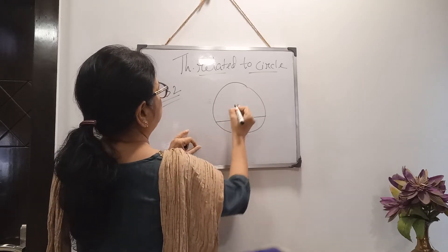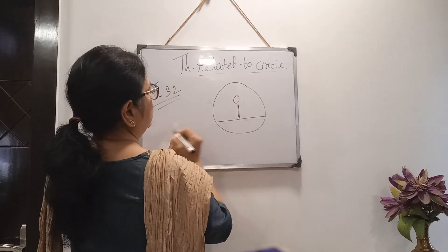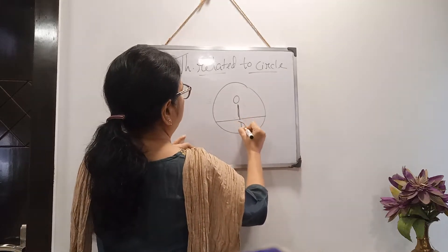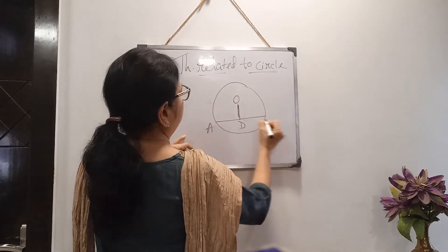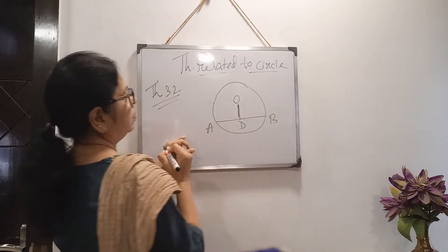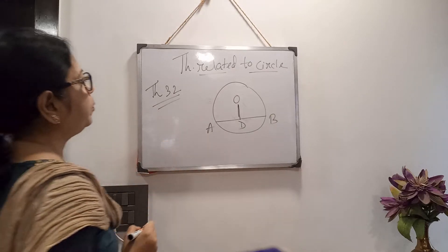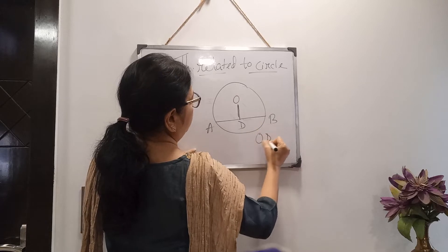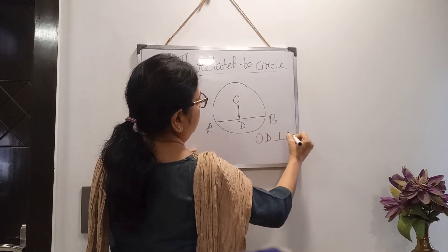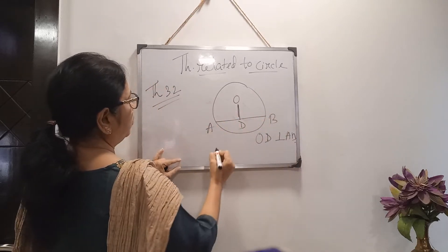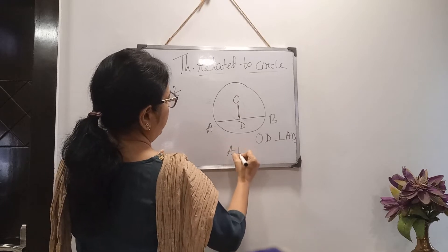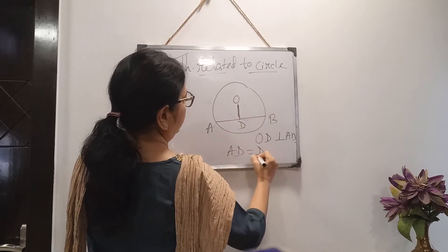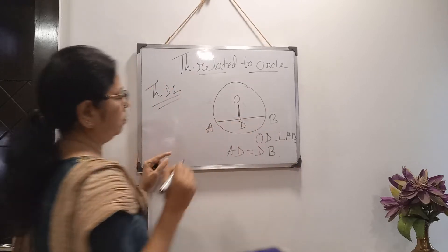Let O be the center. OD is the perpendicular and AB is the chord. It is given that OD is perpendicular on AB. We have to prove that D is the midpoint of AB, that is, AD equals DB.